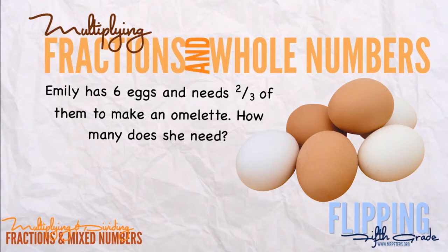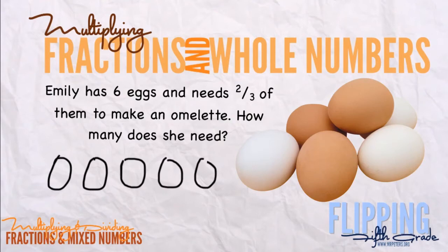To do this we can actually draw out the six eggs — one, two, three, four, five, six. Now let's look at our denominator. Our denominator is three, so we want to think about how we can split up these six eggs into three equal groups.